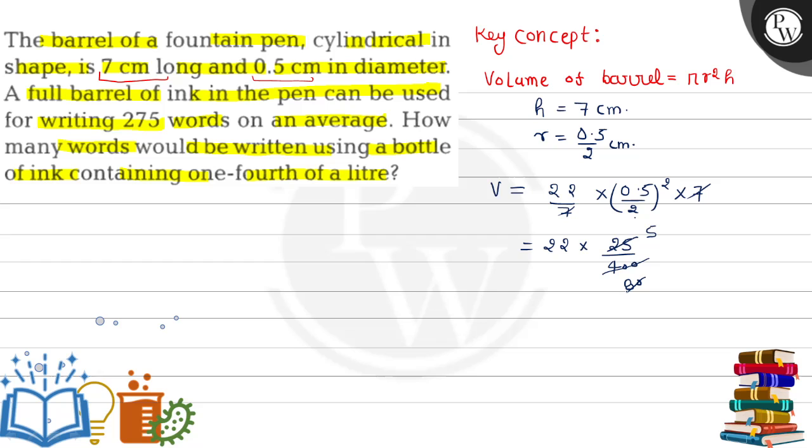Here we have one barrel equal to 22 upon 16 centimeter cube. One barrel equal to 275 words. So we can say volume of barrel, which is 22 upon 16 centimeter cube, equals 275 words. This is equation one.